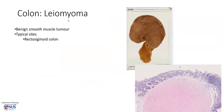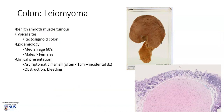The leiomyoma of the colon is a benign smooth muscle tumour which typically occurs in the rectosigmoid colon, usually in older patients and with a slight male predominance. Clinically, they can often be asymptomatic — in fact, they are often very small and only incidentally discovered on endoscopy. If they are larger, as in this case, they can give rise to obstruction or to bleeding and ulceration.